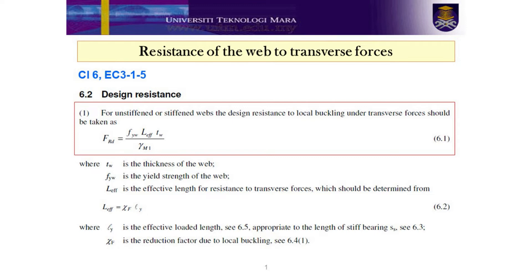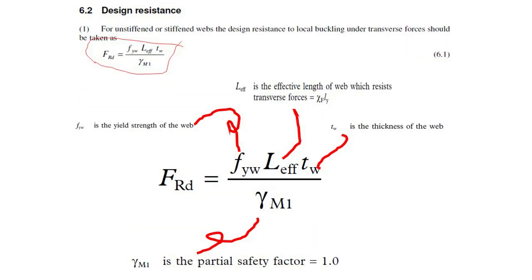It is stated that the design resistance of webs to local buckling is given by equation 6.1. Now let's check the resistance of the beam web to transverse forces. By applying equation 6.1 in Clause 6, EC3 part 1.5, you are required to determine a few parameters: yield strength of the web, effective length of the web, and thickness of the web. The partial safety factor you do not need to determine, as we know the value is 1.